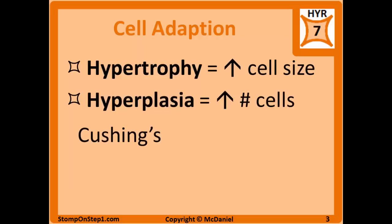Hyperplasia is an increase in the number of cells, so the cells in the organ are going to undergo mitosis and replicate to give you multiple daughter cells. This can also present as an organ increasing in size overall. An example would be hyperplasia of the adrenal cortex in Cushing's disease in order to be able to produce more cortisol.